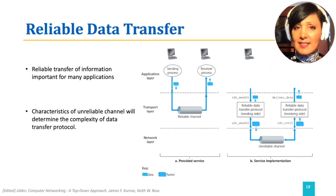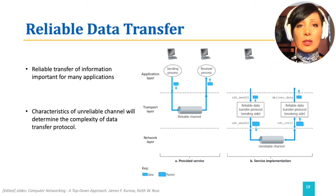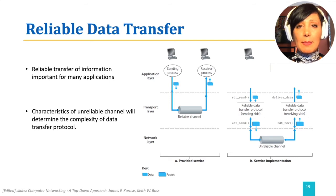RDTSend, which is called by the application layer to do a reliable transfer of data to the receiver. UDTSend, which is called by the RDT to transfer a packet over an unreliable channel to the receiver. RDT receive, which is called when a packet arrives on the receiver side of the channel. And deliver data, which is called by RDT to deliver the data to the application layer.